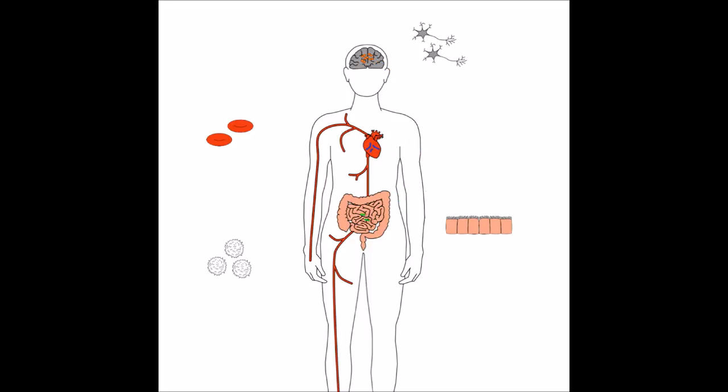Our immune system is armed to defend us against these kinds of pathogens, to find them and kill them. At the same time, the immune system must not attack the body's own cells, because we need them.